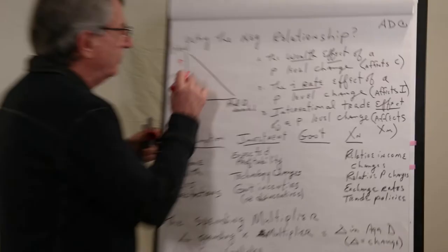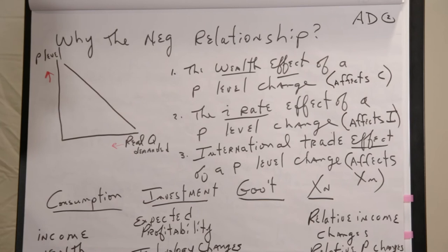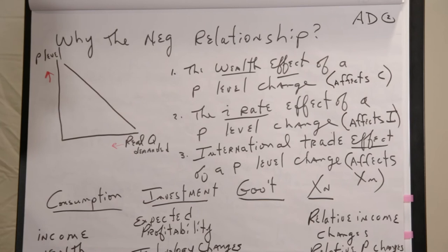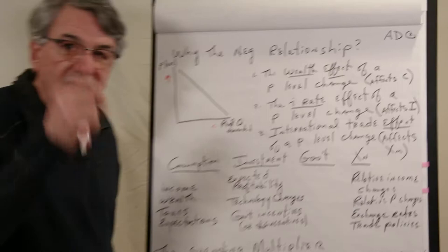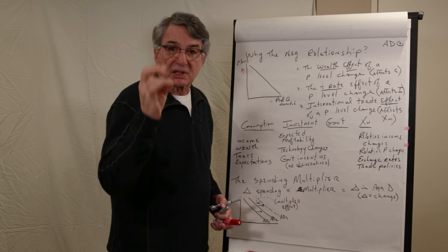Why the negative relationship? Why is it that when the price level goes up, the quantity of real goods demanded goes down? Well, there's a negative relationship for any particular individual good in any particular individual market. When the price of that good goes up, the quantity goes down because of what are called the income and substitution effects. But both the income and substitution effects relate to the price of that good, assuming that all of the other prices and things are constant in the economy.